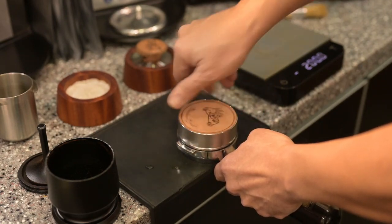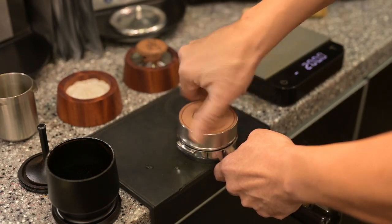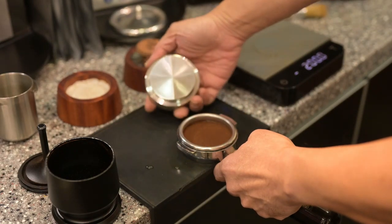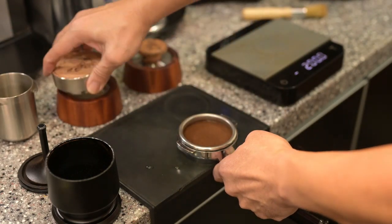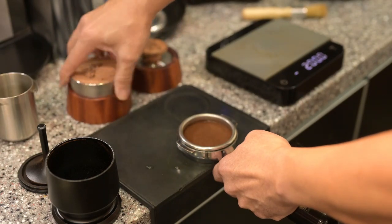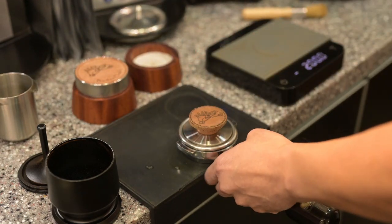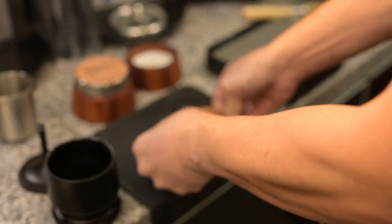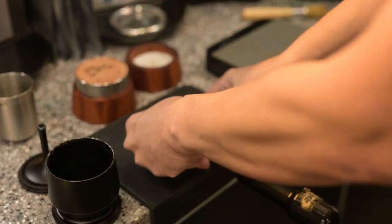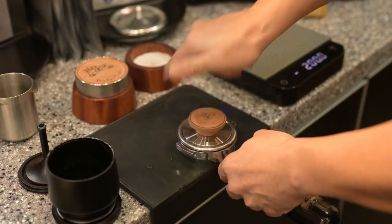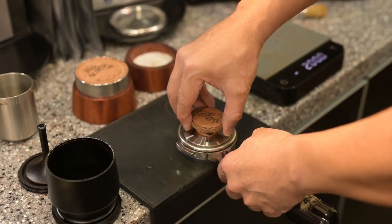I'm using the fixed distribution tool. Venus temper, thumb press to make it perfect. That's all I do. Okay, let's brew now.